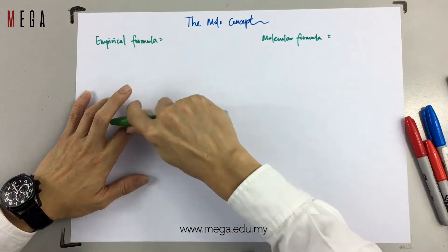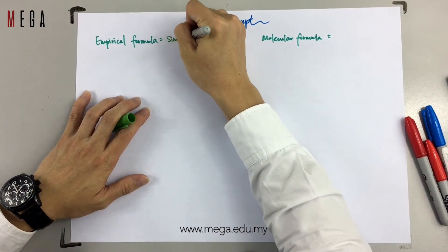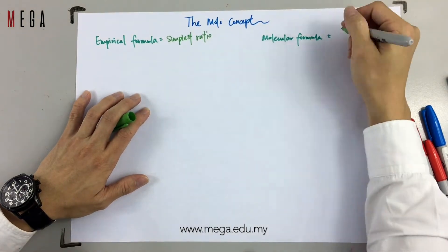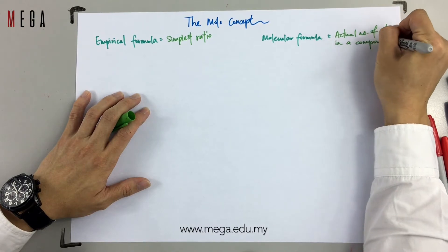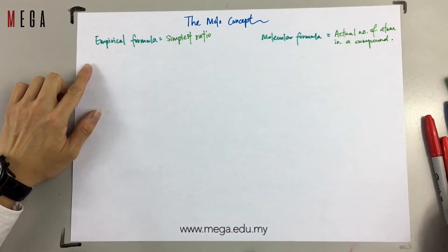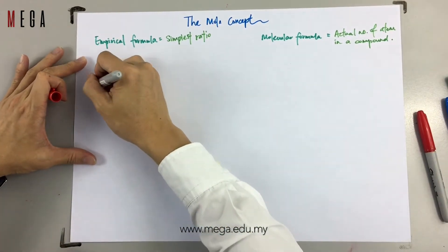What is empirical formula? Empirical formula shows the simplest ratios, whereas molecular formula shows the actual numbers of atoms in a compound.